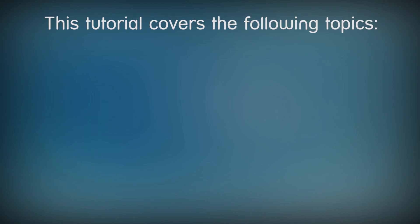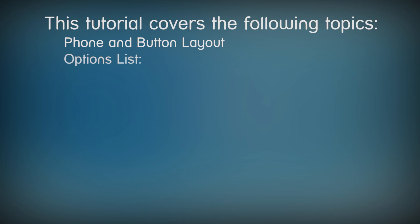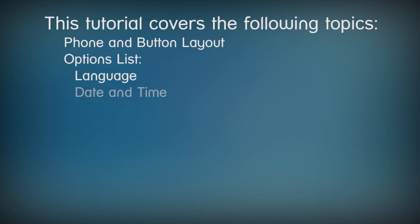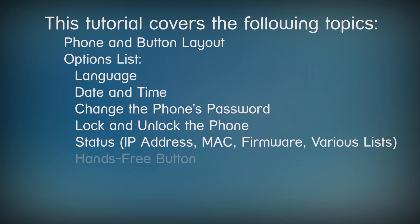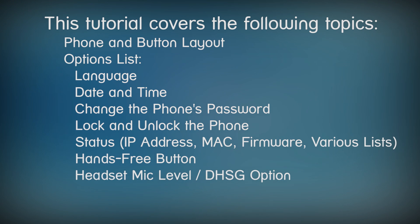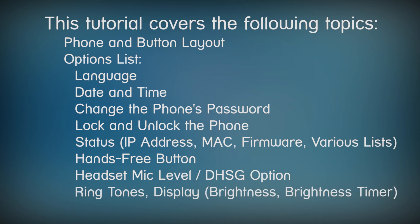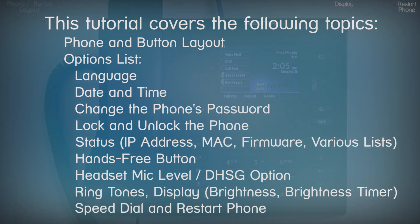In this tutorial I'll cover the following topics: a quick look at the layout of the phone, then a series of options where you can choose a language, modify how the date and time are displayed, change the phone's password, lock and unlock the phone, check the status of the phone, define how the hands-free button works, adjust the headset microphone level, select DHSG, select a ringtone, change the brightness of the LCD screen and brightness timer, and set up speed dial and restart the phone.